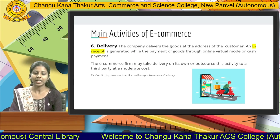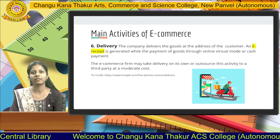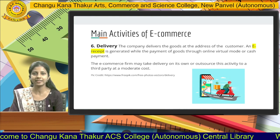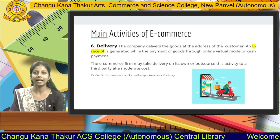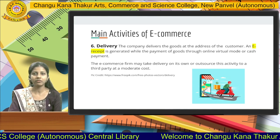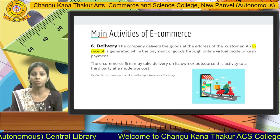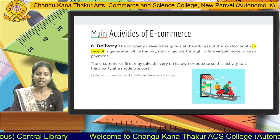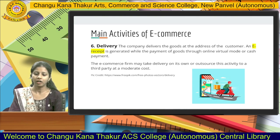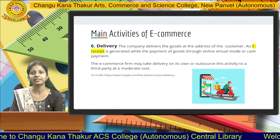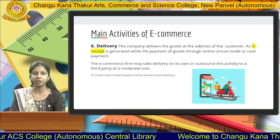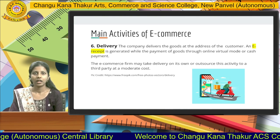Next, we have delivery. The company delivers goods to the address of the customer's residence. Customers have to register their present address, current location, and the particular time for delivery of the product. An e-receipt is generated upon payment of goods through an online virtual mode, and cash payment or digital payment is offered. The e-commerce firm handles delivery on its own or outsources the activity — that is, the logistics department handles delivery of products from one place to another.